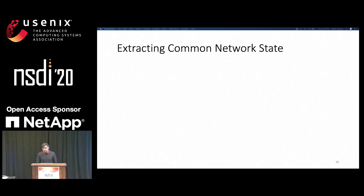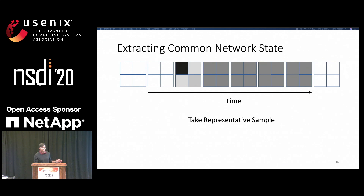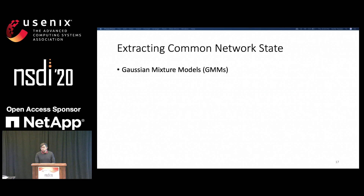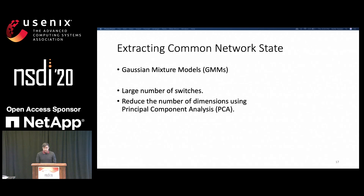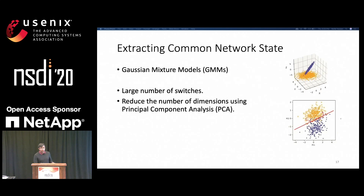The first step in profiling is to extract the network states. We have the trace and we want to get representative samples that accurately represent the network state such that it preserves the spatial distribution of the traffic. We do this by using Gaussian mixture models to cluster the samples. GMMs work great for small topologies. The challenge is making them work for a large number of switches, as a large number of devices can create a huge number of dimensions in the data. So we pre-process the data using principal component analysis, which reduces the number of dimensions by removing redundancies in the original data and creating a new set of independent features that explains most of the variability. PCA works great for networking data because networking data is highly correlated, and we show that correlation in our paper.